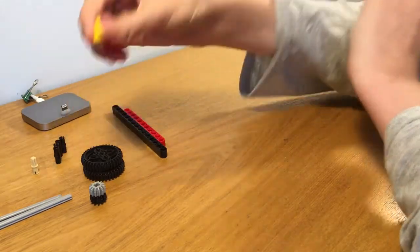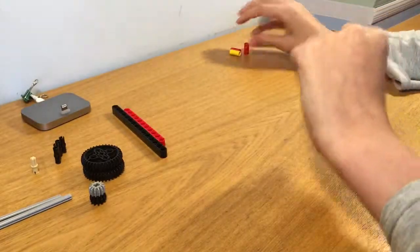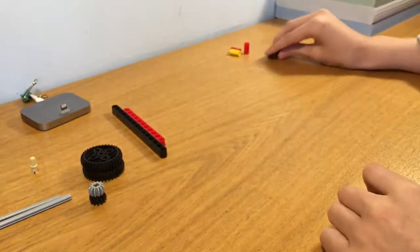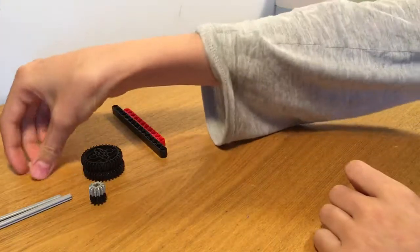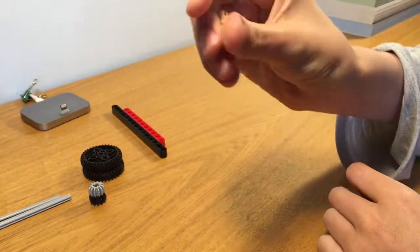So to begin with, you'll need three pin extensions, four black pins, one tan axle pin.